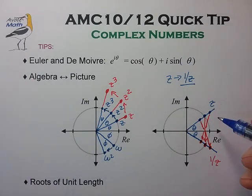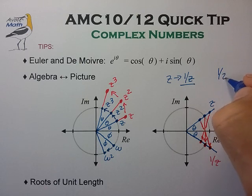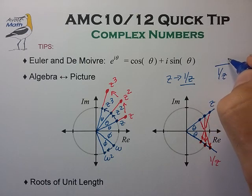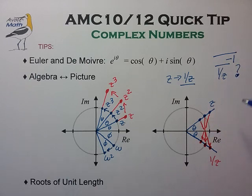So as an exercise, see if you can use this graphical picture to understand the expression 1 over z complex conjugate, inverted, complex conjugate, and see if you can understand what that is using this graphical construction.